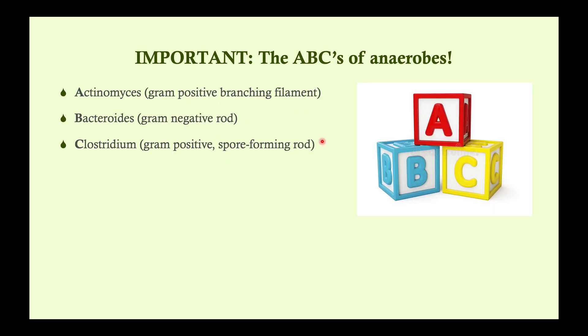Very important — you need to know what your anaerobes are. It's the ABCs of anaerobes: A, B, C. Certainly these aren't all of the anaerobes, but they're the three that come up most in clinical practice and on your exam. A is actinomyces, the topic of this talk, which is a gram-positive branching filament. B is bacteroides, a gram-negative rod, which we'll discuss when we get to the gram-negatives. And C is clostridium, a genus of gram-positive spore-forming rods. Actinomyces, bacteroides, and clostridium are all obligate anaerobes.